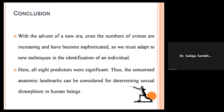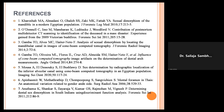In conclusion, with the advent of new era, the number of crimes is increasing and becoming more sophisticated. We must adapt to new techniques in identification of individuals and easy methods to help the forensic department. All eight predictors were significant, and thus these anatomic landmarks can be considered for determination of sexual dimorphism in human beings.